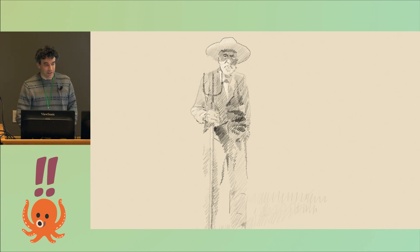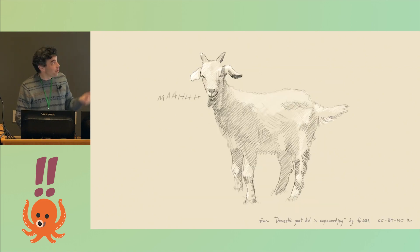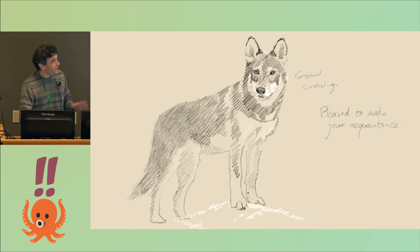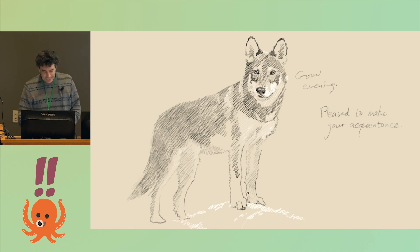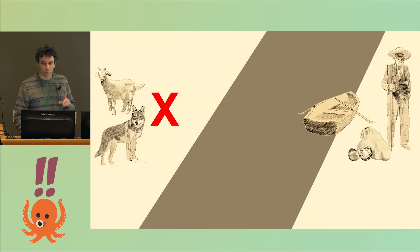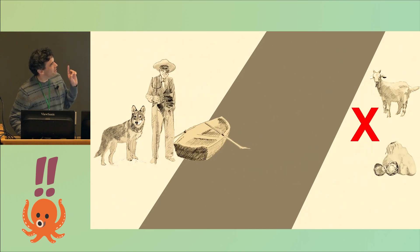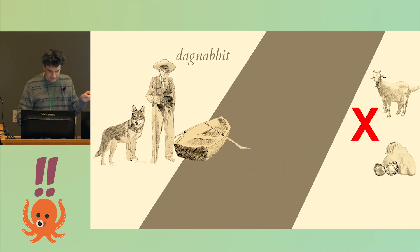Once upon a time, there was a farmer named Yu, and Yu went to a fair and bought some cabbages, and a goat, and a wolf. You were in a good mood, you bought a wolf. But it complicates your return journey because your boat can only carry one thing at a time. Wolves eat goats, so that's no good, and goats eat cabbages, so that's no good.